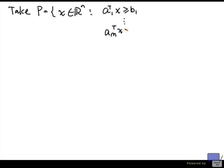So how can we identify extreme points in a polyhedron? Let's look at a polyhedron given by the set of x satisfying these inequalities.